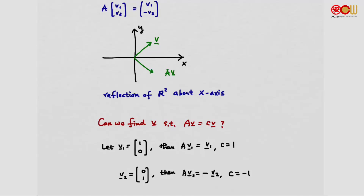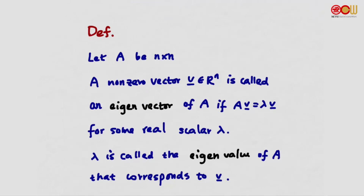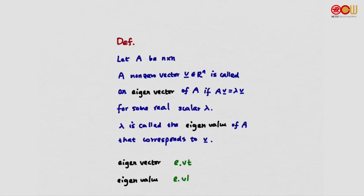Now let's define eigenvalue and eigenvectors formally. Definition: A is an n by n matrix. A non-zero vector V in R^n is an eigenvector of A if AV is equal to lambda V for some real scalar lambda, and this lambda is called the eigenvalue of A that corresponds to V. We will use the abbreviations: eigenvector abbreviated as EVT, and eigenvalue as EVL.